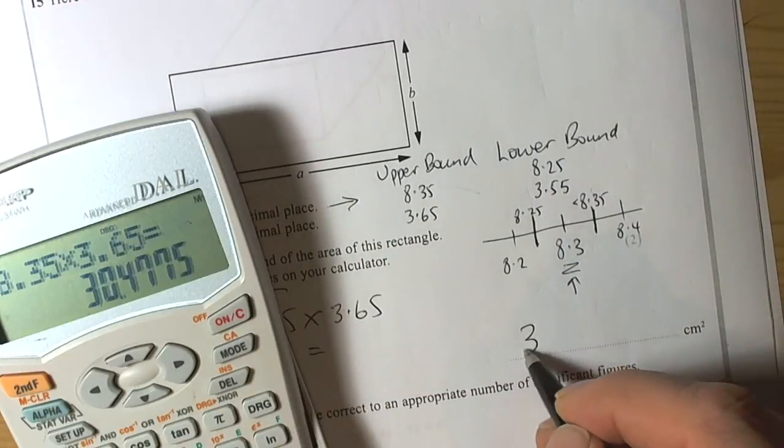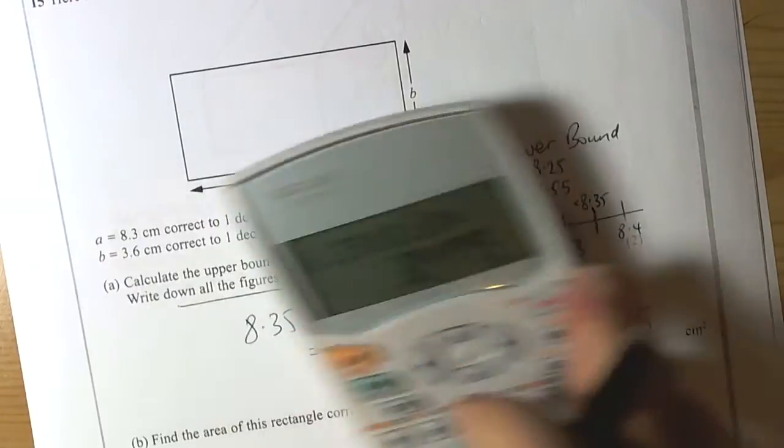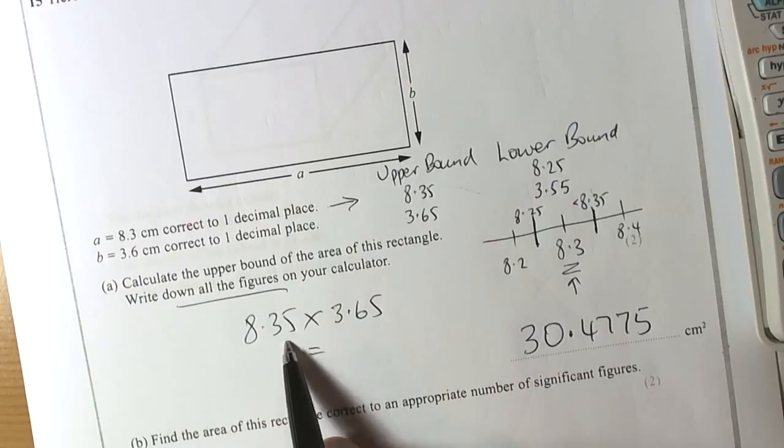So we've got 30.4775. So that's going to be the upper bound of the area.